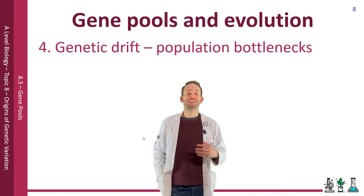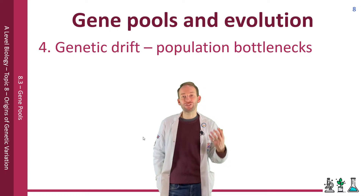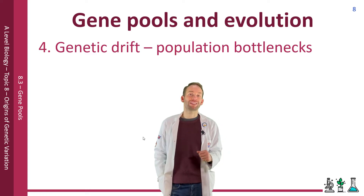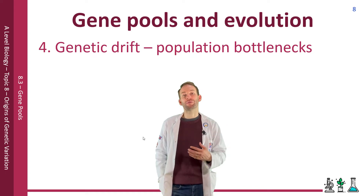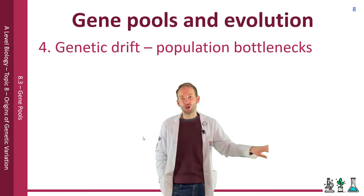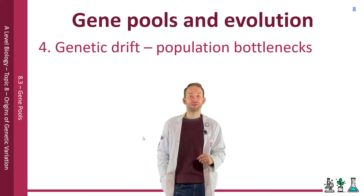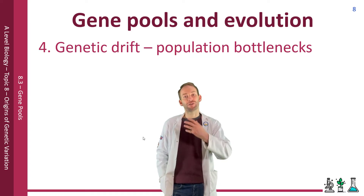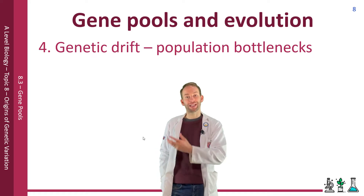A population bottleneck occurs when the size of a population is dramatically reduced by a natural catastrophe, a new disease, hunting by humans, other very efficient predators, or habitat destruction. As a result, many of the original alleles are lost, and the remaining population have a very limited gene pool.